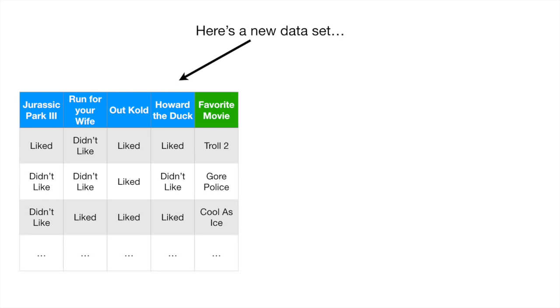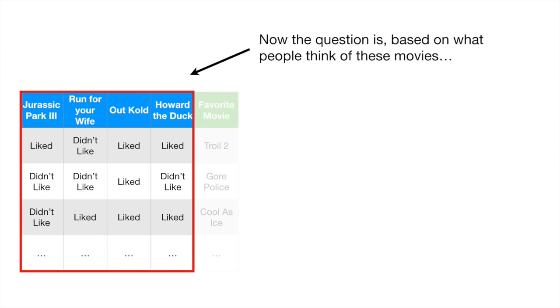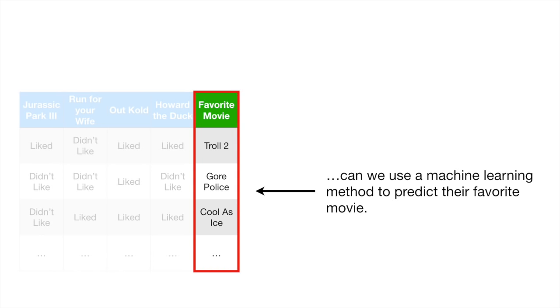Here's a new data set. Now the question is, based on what people think of these movies, Jurassic Park 3, Run For Your Wife, Out Cold spelled with a K, and Howard the Duck, can we use a machine learning method to predict their favorite movie?